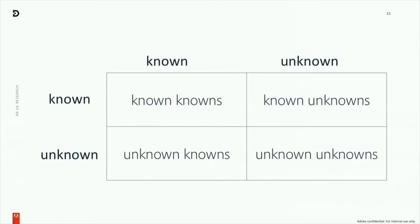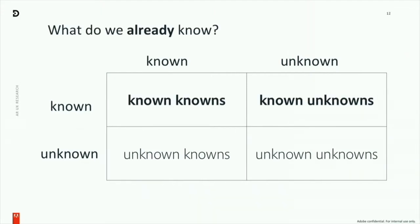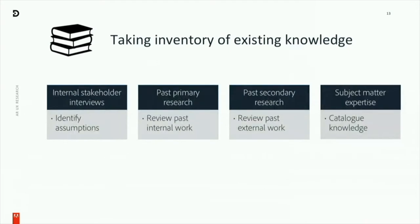What I like to do is start with a matrix of our knowns along the top and our unknowns along the bottom. Generally speaking, whenever I've figured out these two cells, I have a pretty good idea of when and where I need to start conducting primary or new research — research that's not going to be on the next slide. This is just good UX research practice.